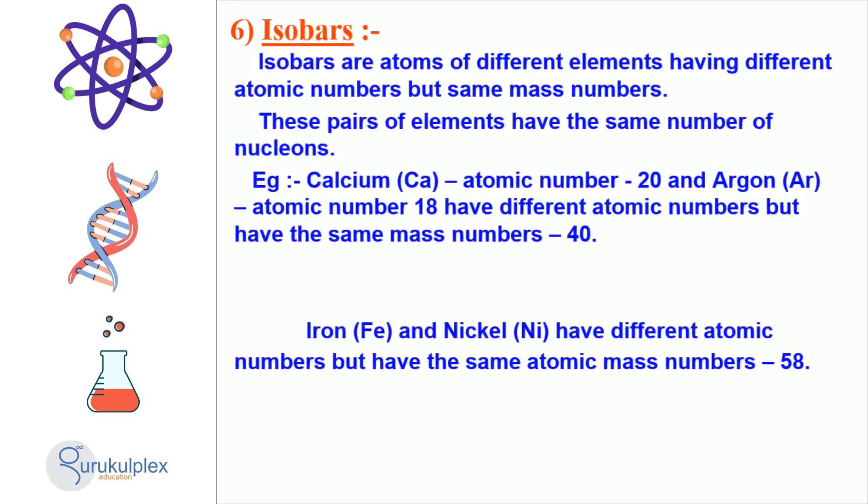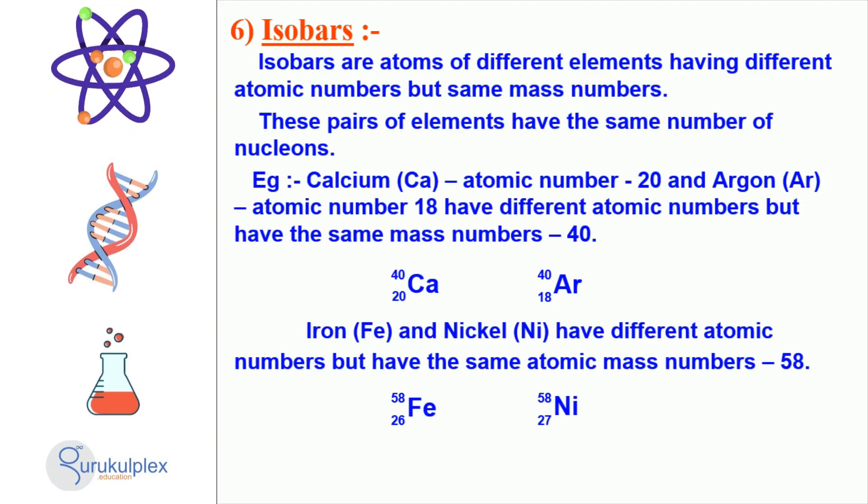Atomic structures can be quite complex, but one of the ways researchers simplify their understanding is by looking at isobars, atoms of different elements having different atomic numbers but the same mass number. For example, calcium with an atomic number of 20 and argon with an atomic number of 18 both have a mass number of 40. Similarly, iron with an atomic number of 26 and nickel with an atomic number of 27 both have an atomic mass of 58. The ability to recognize and study these groups of elements has allowed researchers to better understand the structure of the atom and to continue innovating in the field of atomic structure.